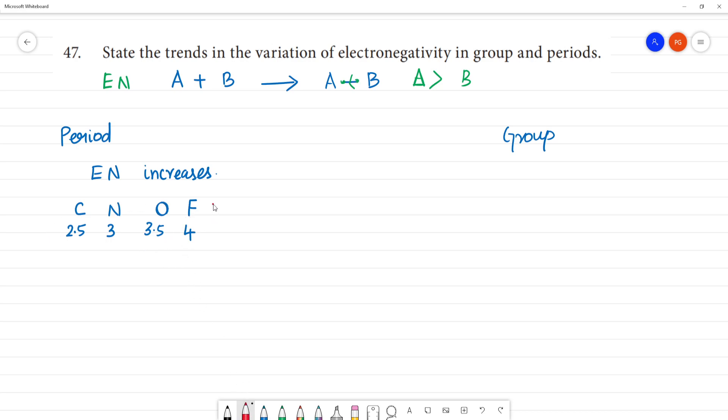Fluorine has the highest electronegativity value and oxygen has the second highest. Chlorine is approximately 3.1. Oxygen has the second highest electronegativity value.